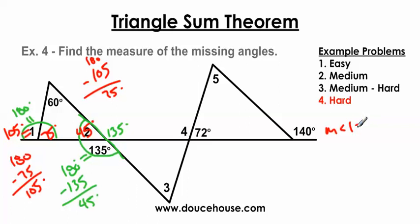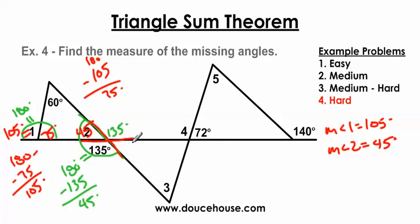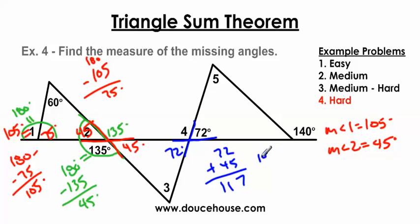So the measure of angle 1 equals 105 degrees, and angle 2 is 45 degrees. Everything equals 180 degrees. Notice we have 105, 75, 60, 45 — and using vertical angles, this is also 45 degrees. To find angle 3, I need to know this angle. Using another vertical angle, this is 72 degrees. 72 plus 45 is 117, and 180 minus 117 is 63 degrees. The measure of angle 3 is 63 degrees.